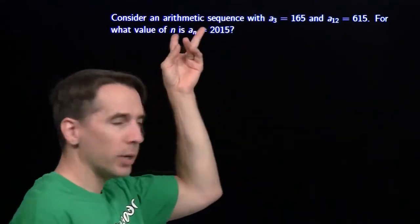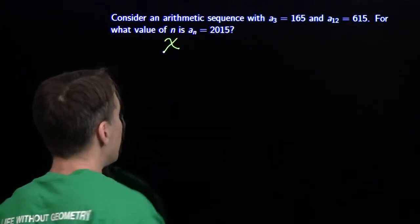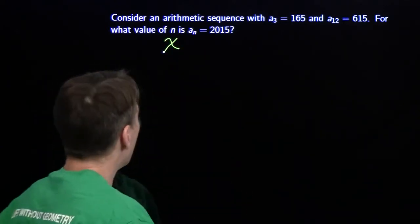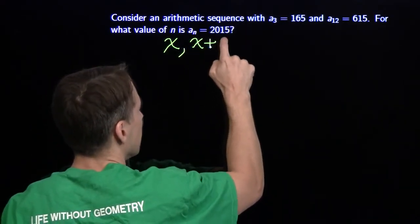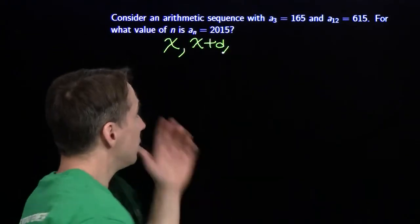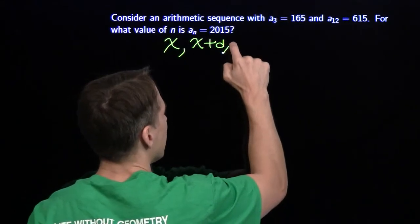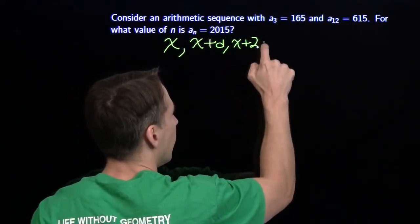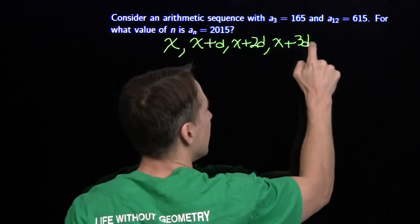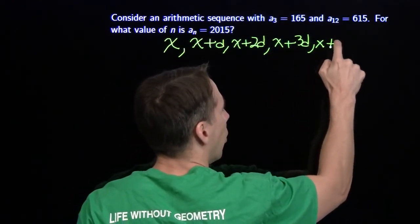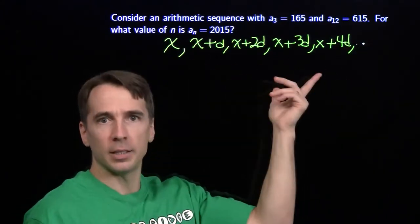I have to start off by remembering what an arithmetic sequence is. In an arithmetic sequence, we start at some first term — I'm going to call that x — and then to get to the second term, we add on some amount, I'm going to call that d. So the next term is x plus d, and then each term after that we keep adding on that same d amount. So we have x plus 2d, x plus 3d, x plus 4d, and on and on. This is what we mean by an arithmetic sequence.